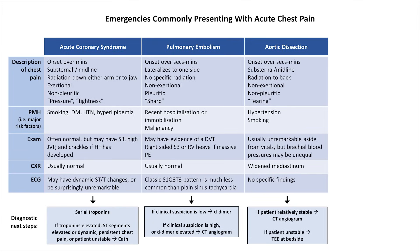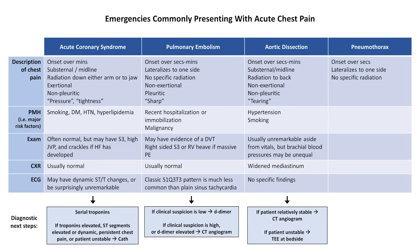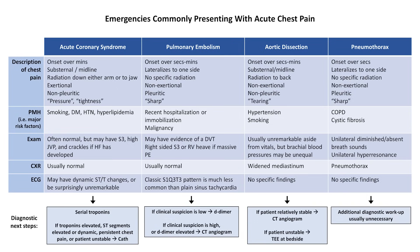Finally, with a pneumothorax, the onset of pain is usually very abrupt, often instantaneous. It lateralizes to the affected side, is non-exertional, is pleuritic, and is described as sharp. The patient may have a history of COPD or cystic fibrosis, which are risk factors. The physical exam will reveal unilateral diminished or absent breath sounds and hyperresonance. A pneumothorax large enough to be clinically relevant will always be visible on routine x-ray, and further testing beyond this is usually not necessary.